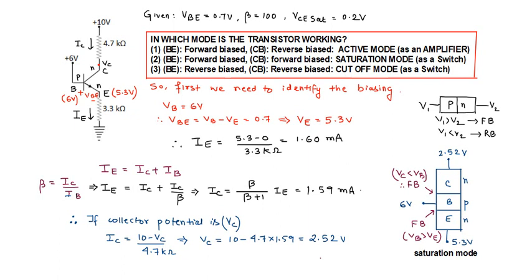To determine whether a junction is forward or reverse biased, consider a simple PN junction. If the P side is at higher potential with respect to the N side, the junction is forward biased. If the P side is at lower potential with respect to the N side, the junction is reverse biased. We will calculate the potentials at the collector, base, and emitter terminals and use this to justify whether each junction is forward or reverse biased.